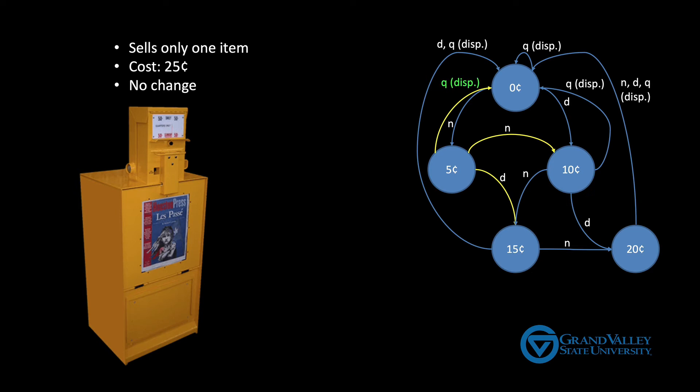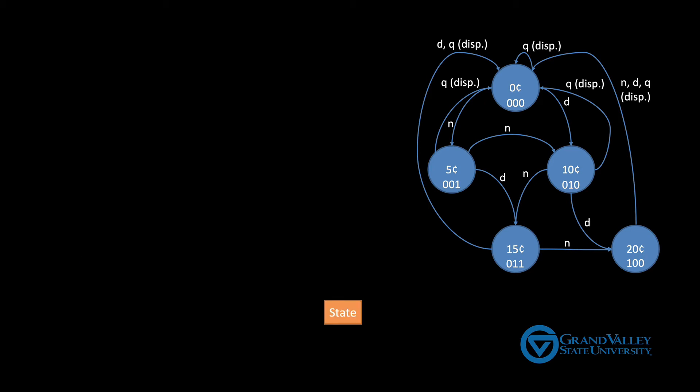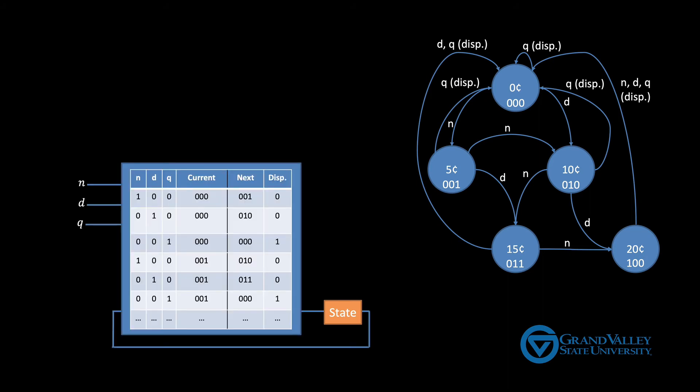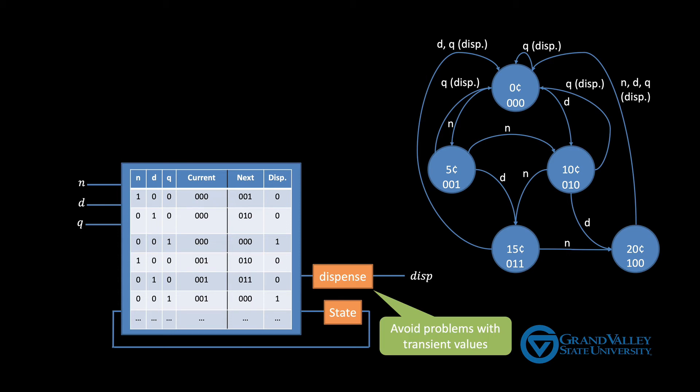We can implement this state machine using the same techniques we used for the traffic light. First, we number the states. And now notice we have five states this time, so we need three bits to remember what state we're in. And then next, we add a register to store the current state. And now we need a truth table mapping the inputs and the current state to the desired next state and the output.